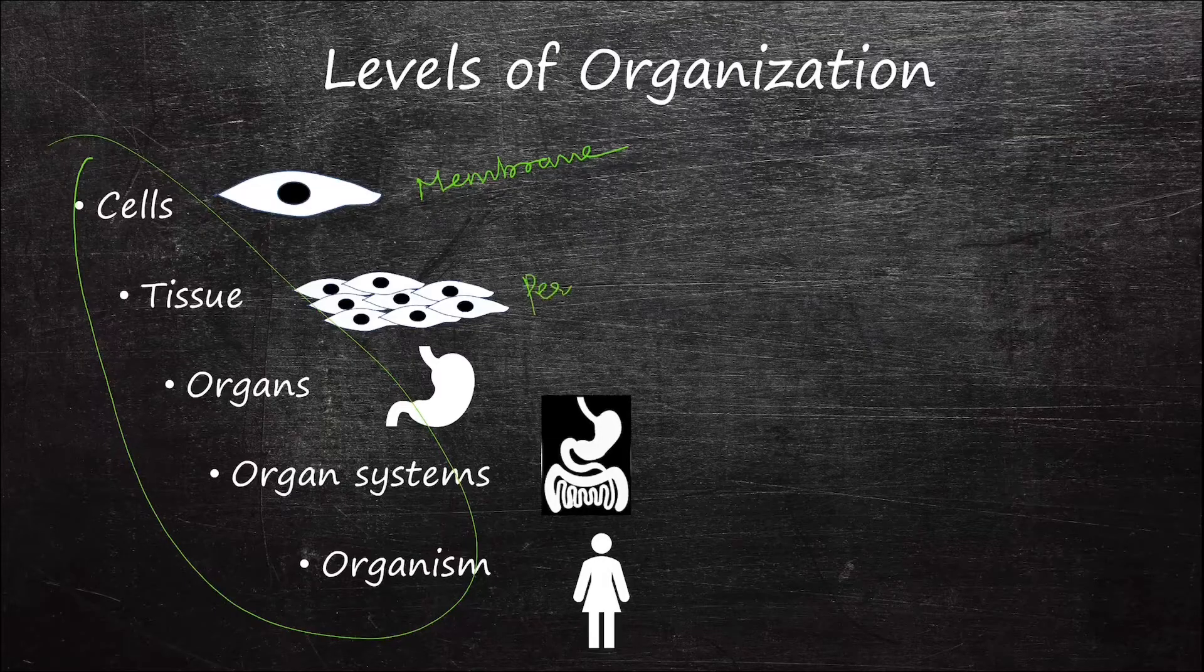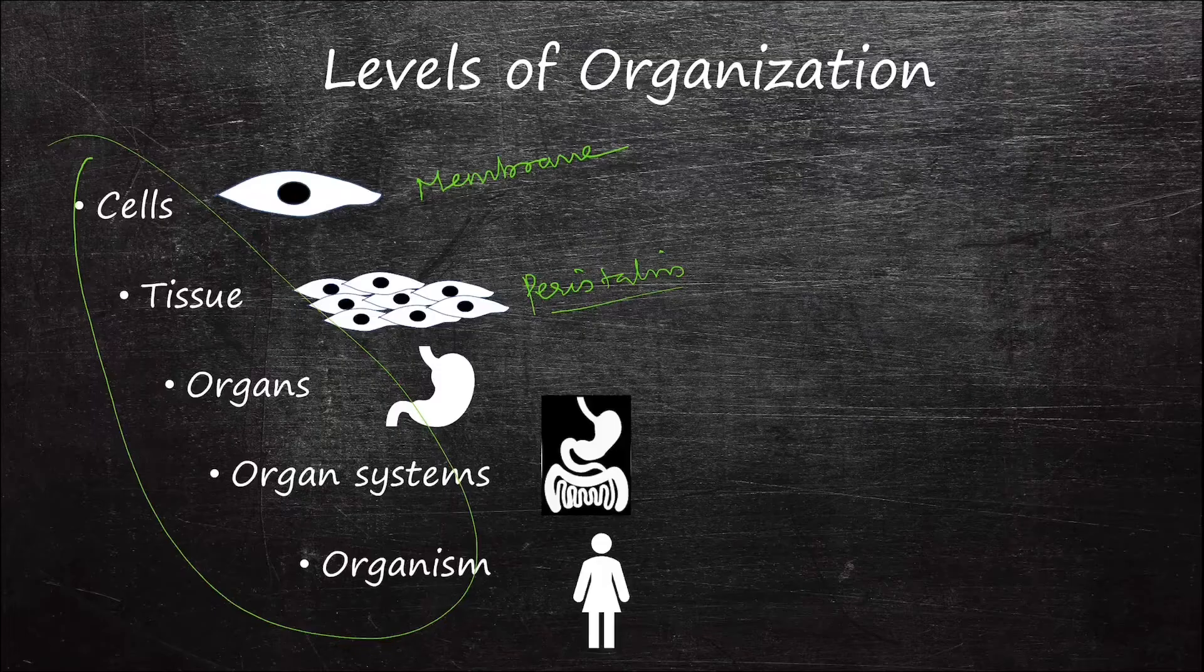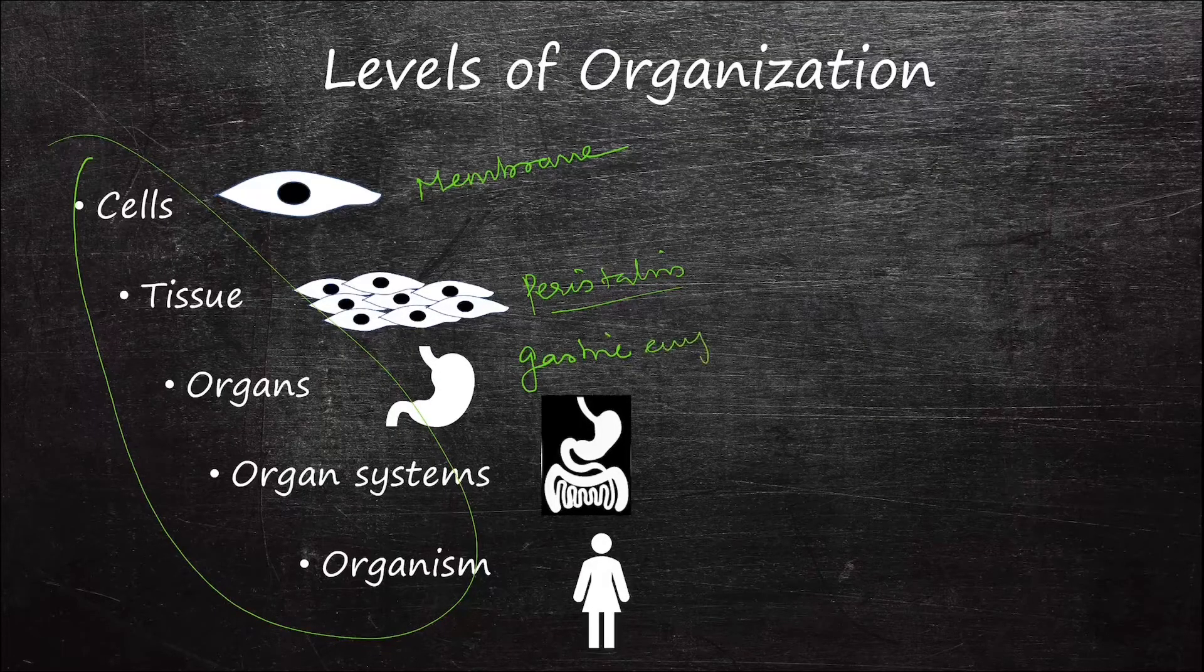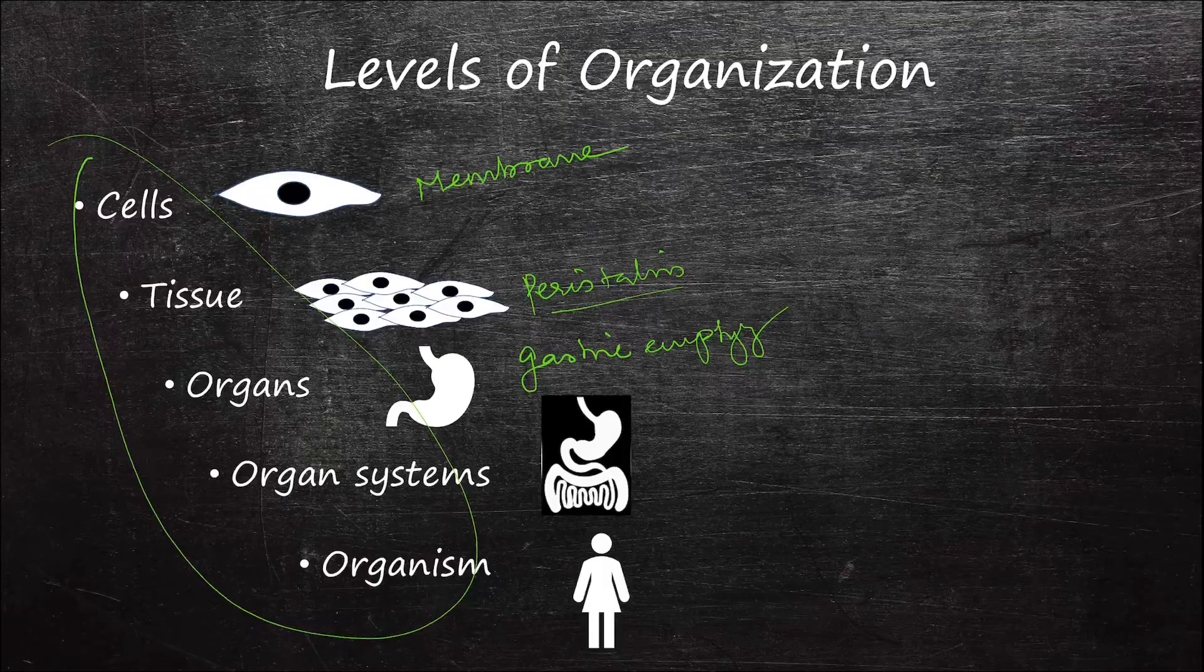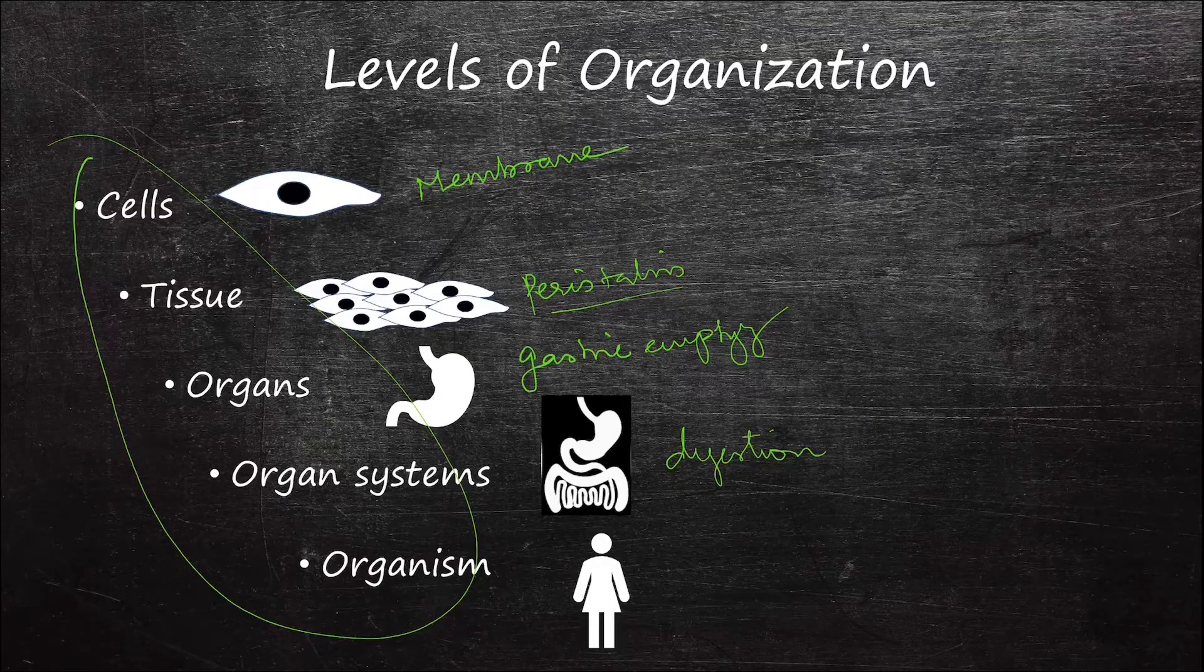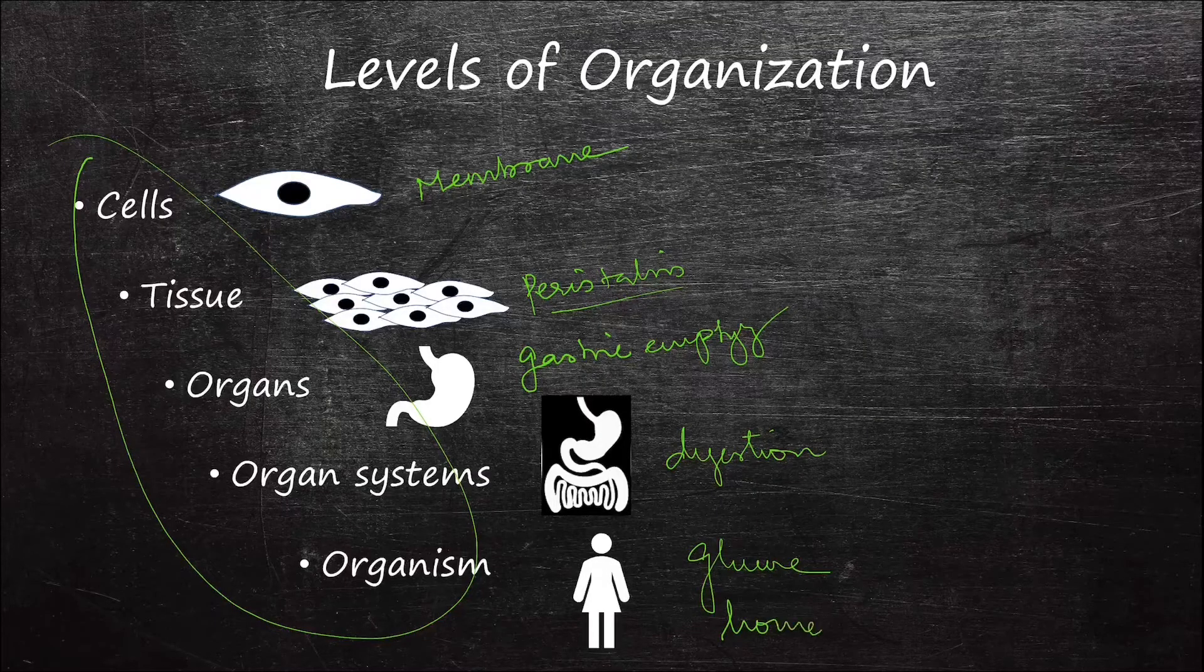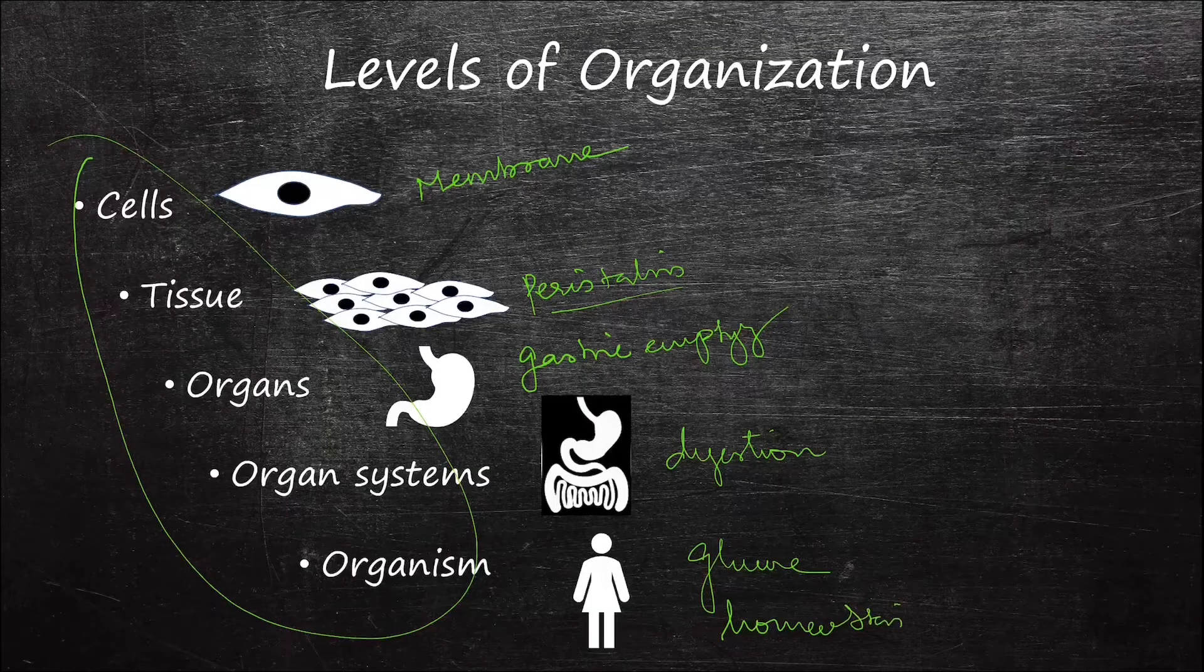Some topics like gastric emptying will be at the organ level, and functions like digestion will be studied at an organ system level, and some functions like glucose homeostasis are studied at an entire organism level which involves multiple organ systems.